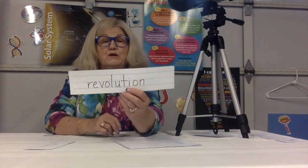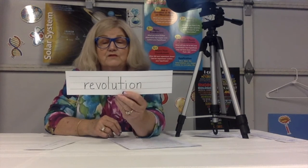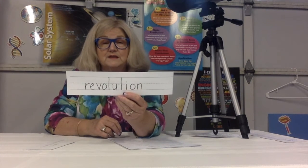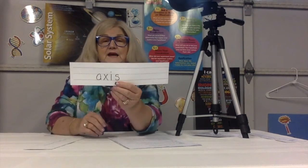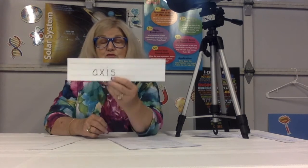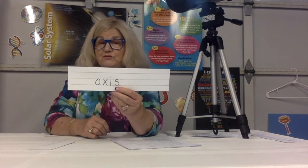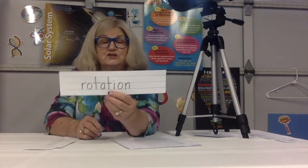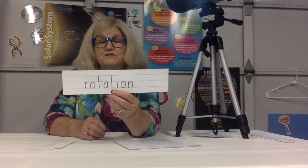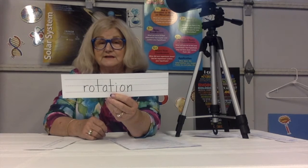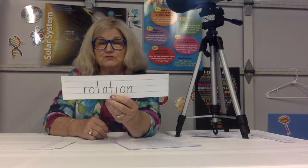We'll also talk about revolution — the movement of earth around the sun is called revolution. We already mentioned axis, which is the imaginary line that runs through earth from the north pole through the south pole. And the last vocabulary word is rotation: it takes 24 hours for earth to complete one rotation on its axis.